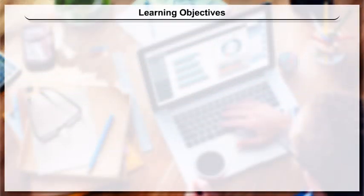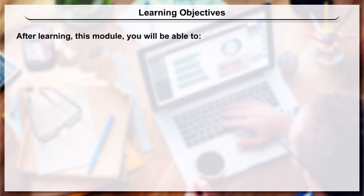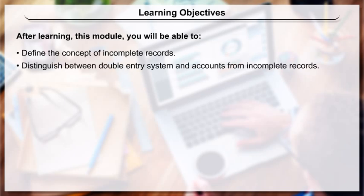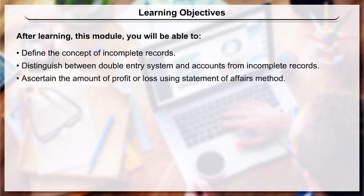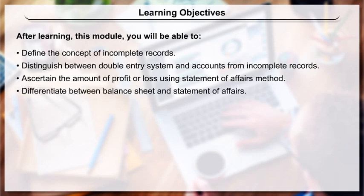Learning Objectives: After learning this module, you will be able to define the concept of incomplete records, distinguish between the double entry system and accounts from incomplete records, ascertain the amount of profit or loss using the statement of affairs method, differentiate between a balance sheet and a statement of affairs, and prepare a statement of affairs using given data.